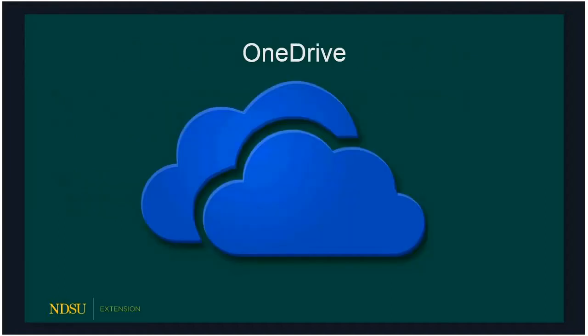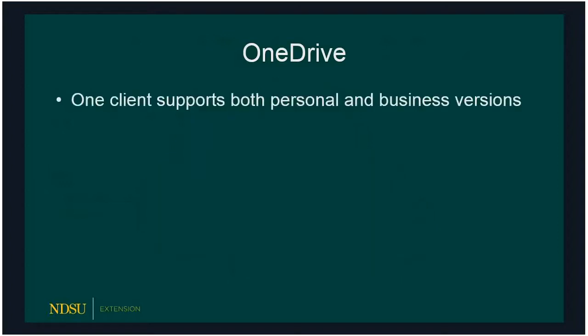We'll take a quick look at each of the new versions — the new OneDrive and Google File Stream — covering a couple of highlights of each. You'll notice they're pretty much identical to the old ones. Then we'll go through the different status icons so you can see what they look like, and a quick blurb about the menu items, and then we'll jump into a demo. OneDrive now has one client that supports both personal and business versions — there's no two versions anymore, which takes a lot of the confusion out of it. It still has one terabyte of storage.